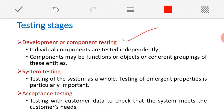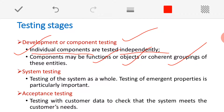The first testing stage is component testing, also called development testing. A component is a part of the software system — a function, an object, or a group of objects or functionalities. Every individual component has to be tested independently. In component testing, the software is tested part by part. For example, if five components are identified, all five must be individually tested — not the full software together.